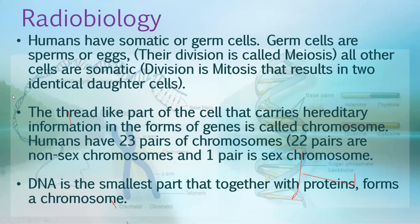Our target in radiation oncology is the DNA inside the chromosome, located within the cell nucleus. When treating a patient, we aim to damage the DNA inside the nucleus, making it ineffective so that cancerous cells die.